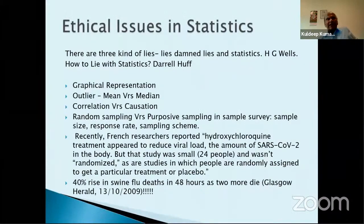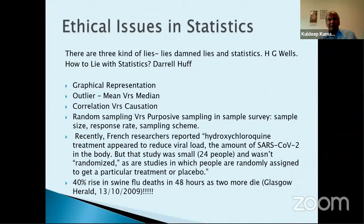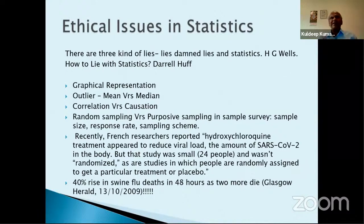Before we go further, ethical issues are very important because a lot of people are misusing statistics. As they say, there are three kinds of lies: lies, damn lies, and statistics — though this is not truly accurate. There is a book called 'How to Lie with Statistics' by Darrell Huff, but if you use statistics sincerely there's no problem. People misuse outliers — you should use the median when there's an outlier in the data, not the mean, because the mean can be influenced by outliers.